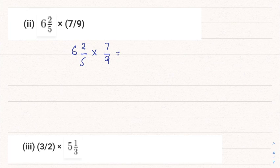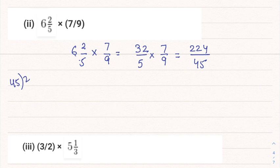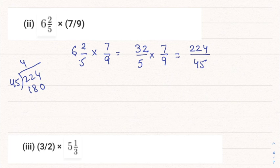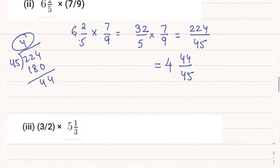Part 2: 6⅖ multiplied by 7/9. Convert 6⅖: 6 into 5 is 30, plus 2 gives 32/5. Multiplied by 7/9: 32 into 7 gives 224, and 5 into 9 is 45. Since 224/45 is an improper fraction, we divide: 45 fours are 180 and the remainder is 44, so the answer is 4 and 44/45.